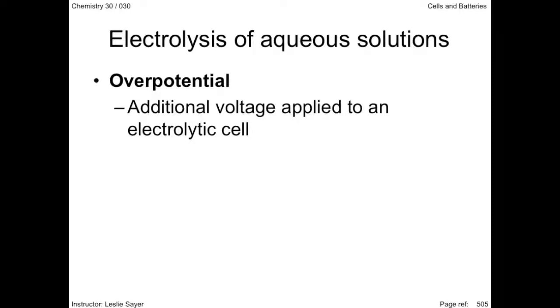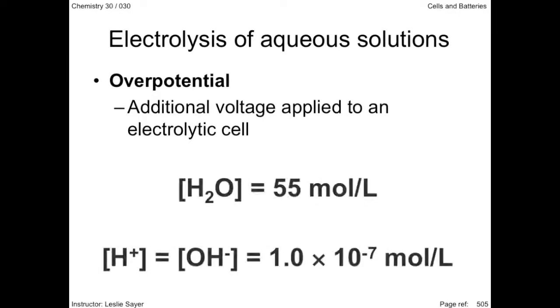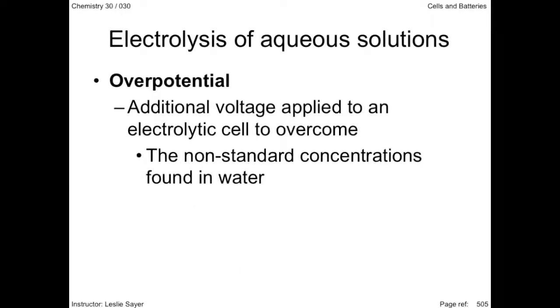There are a number of reasons for this. The ions in the water half reactions and the water itself are not at standardized concentrations. In fact, water has a concentration of 55 moles per liter, while the hydrogen hydroxide ion concentrations are 1.0 times 10 to the negative 7 moles per liter. And the formation of gases at the electrodes requires additional voltage.